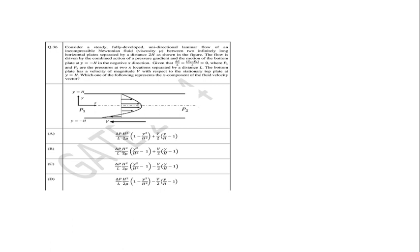Hello, good morning. In the series of solving GATE 2024 questions, there is another question from fluid mechanics. The question is: consider a steady, fully developed — which means there is no acceleration — unidirectional laminar flow of an incompressible Newtonian fluid of viscosity between two infinitely long horizontal plates. The distance between the plates is 2h, so this is y equal to plus h and y equal to minus h.